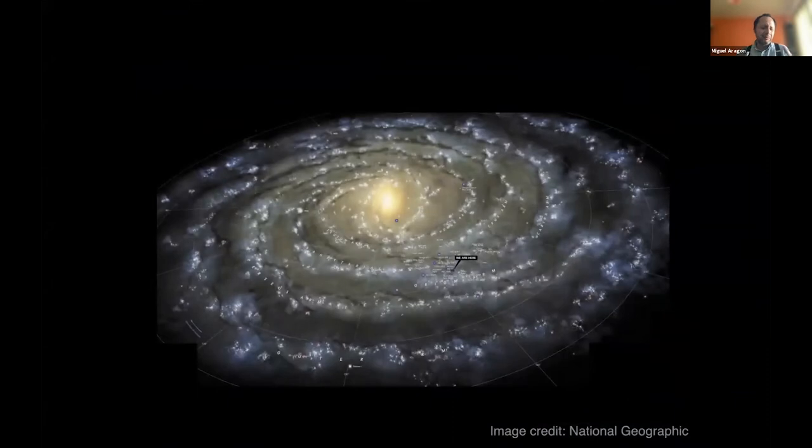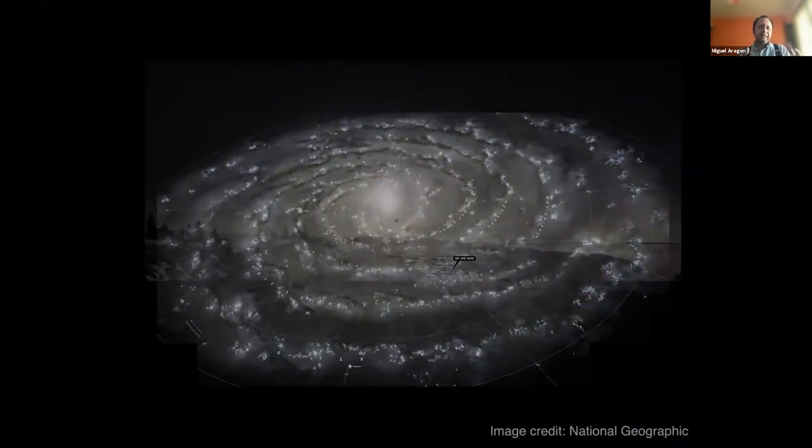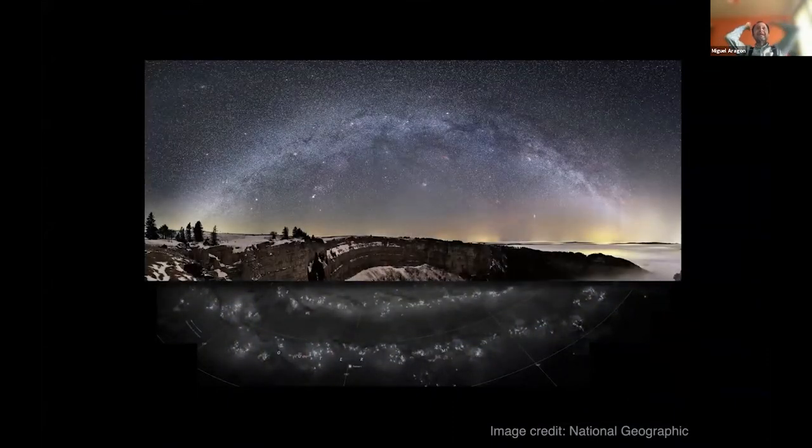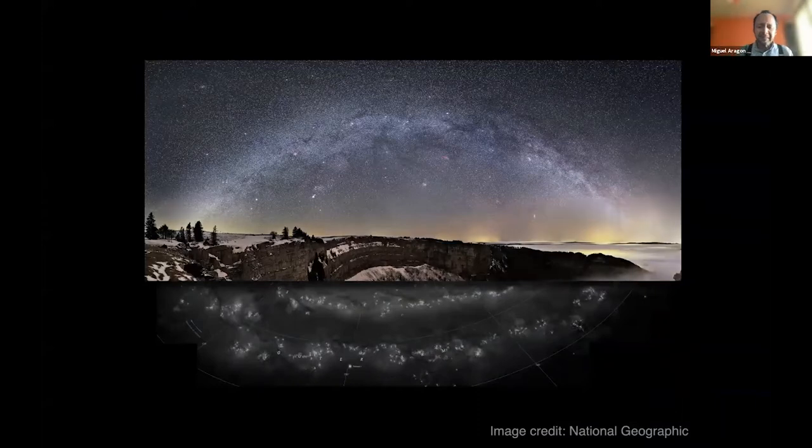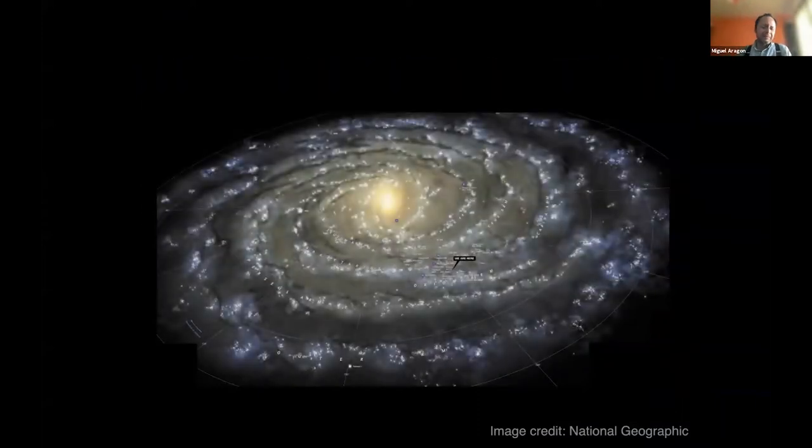These stars are just part of a much larger system, the Milky Way. The Milky Way is this beautiful bright band that we see in the night sky, and it contains something like 100 billion stars like our sun.